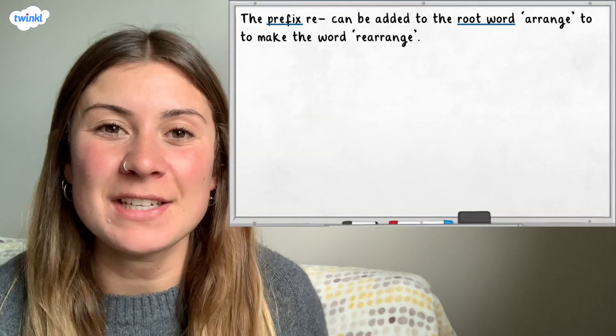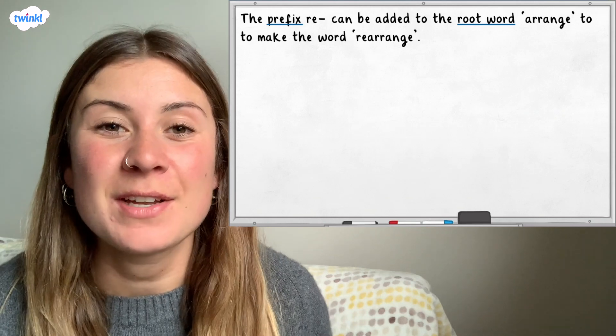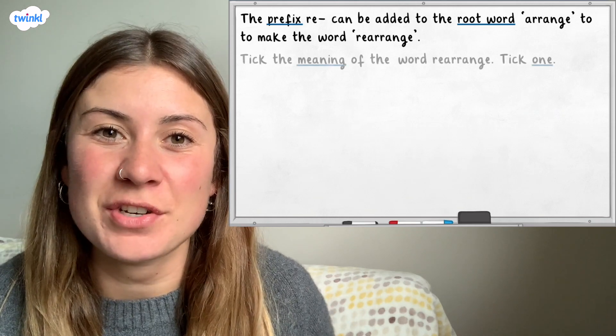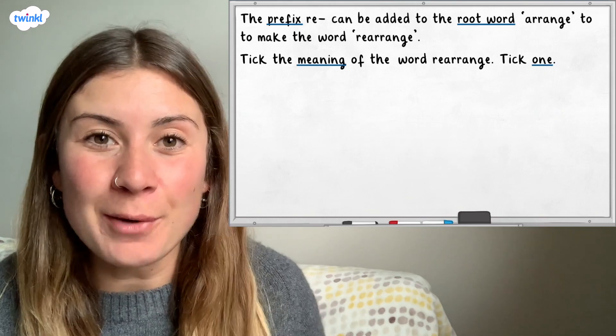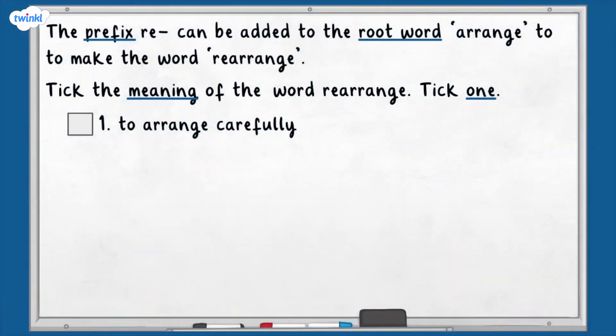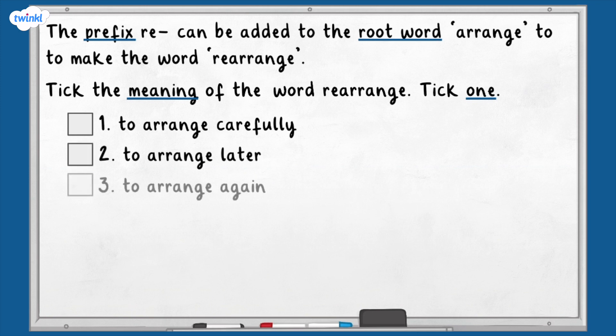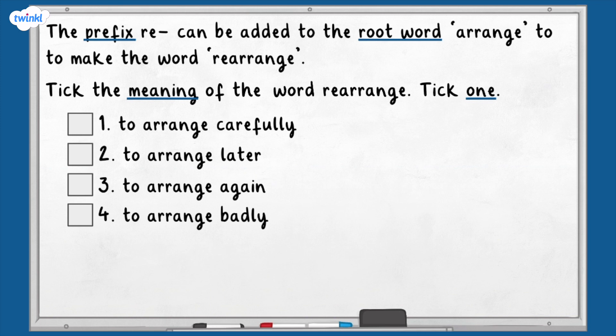Let's take a look at the first question. The prefix re can be added to the root word arrange to make the word rearrange. Tick the meaning of the word rearrange — you can only tick one. One: to arrange carefully. Two: to arrange later. Three: to arrange again. Four: to arrange badly. The question is asking us to consider how the prefix has altered the meaning of the word arrange.